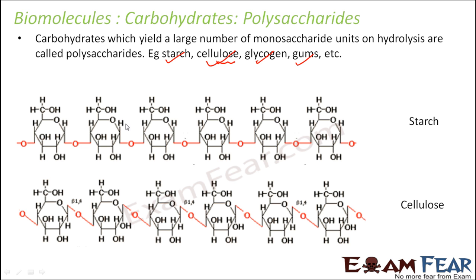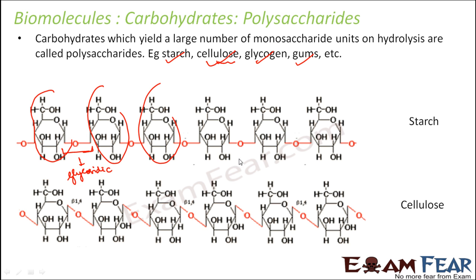If you look at the structures of starch and cellulose on screen, you can actually make out the monosaccharide units — this is one monosaccharide, this is another, and so on. They are all bonded by glycosidic bonds. Here also the process of hydrolysis takes place if you want to break it down, but you will have to repeat the hydrolysis many times since there are so many bonds. Enzymes help make the reaction faster, but the process remains the same — hydrolysis will break starch into all its constituent monosaccharides.